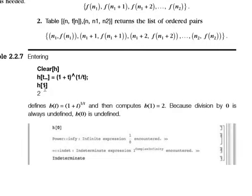If we put h of 1, it means we put the value of t equal to 1, we get the result 2.